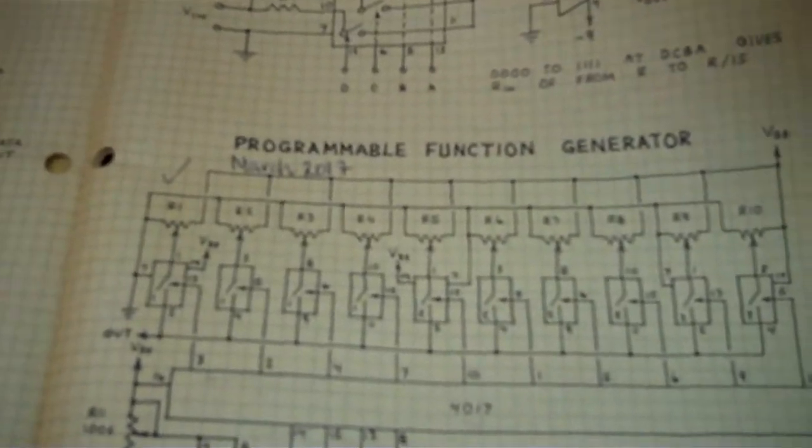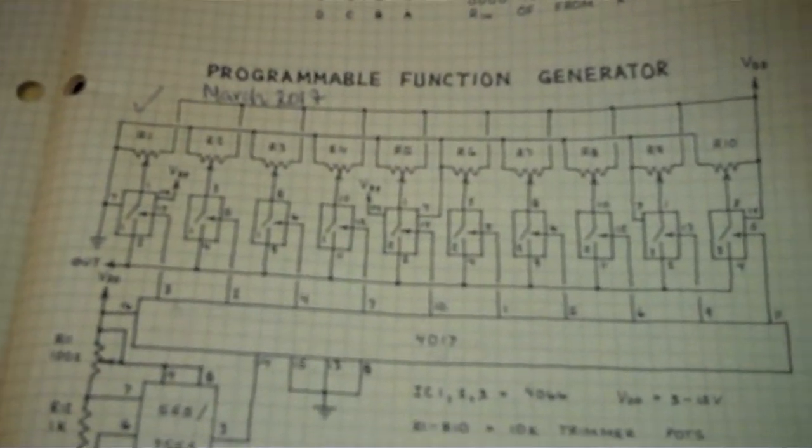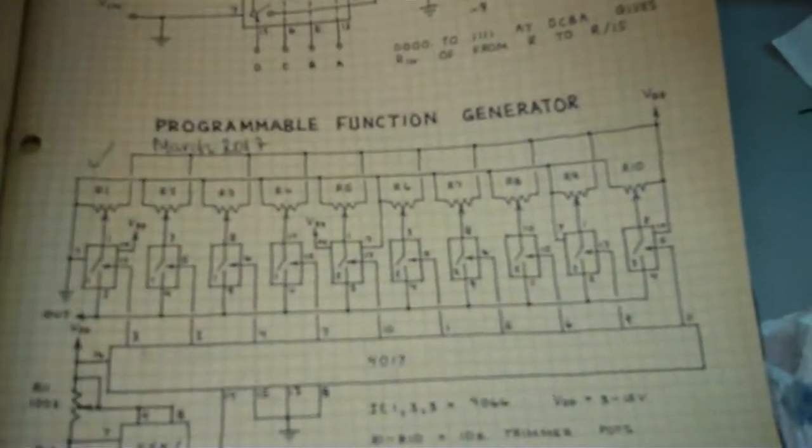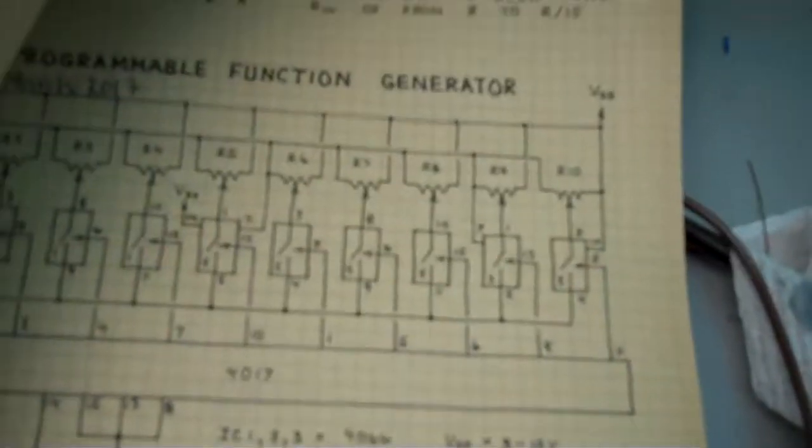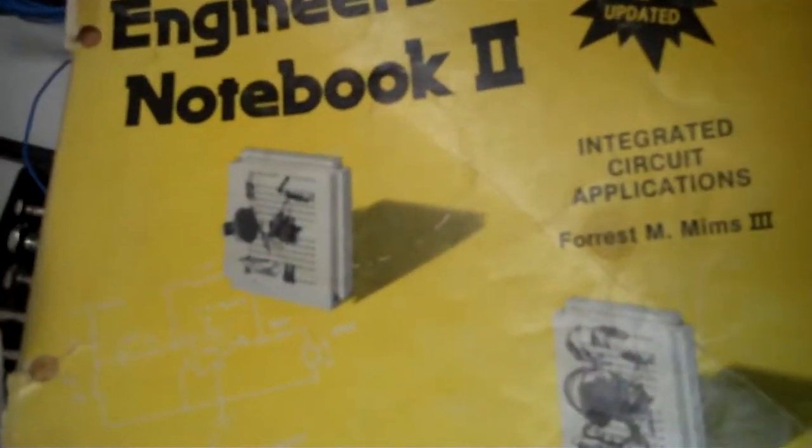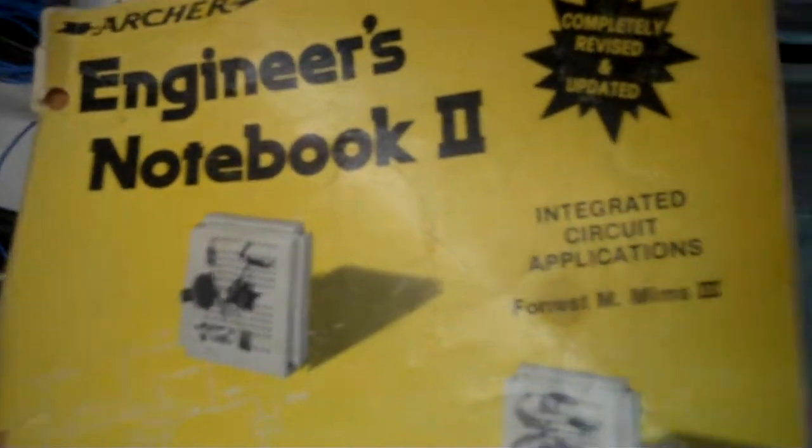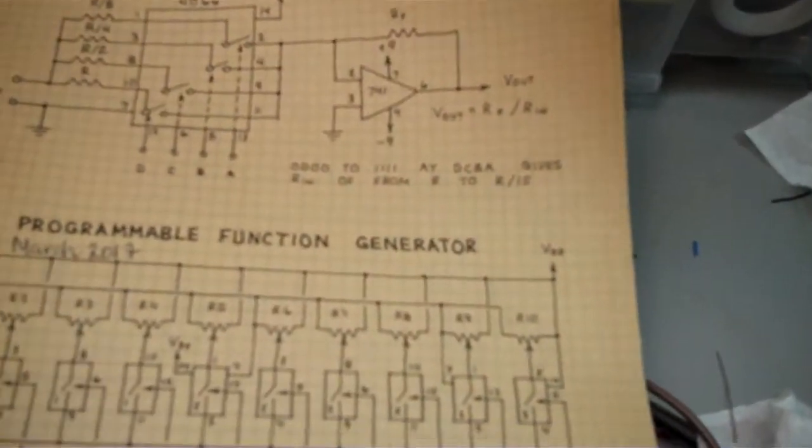Now, this function generator is not your typical function generator where you have a triangle wave, a sine wave, and a square wave. It's a little bit more basic than that. In fact, it's just an experiment. It came from the Engineer's Notebook from Radio Shack by our friend Forrest Mims. Fantastic genius.